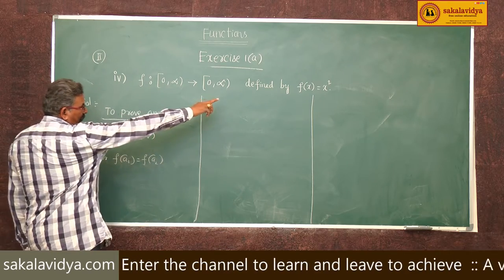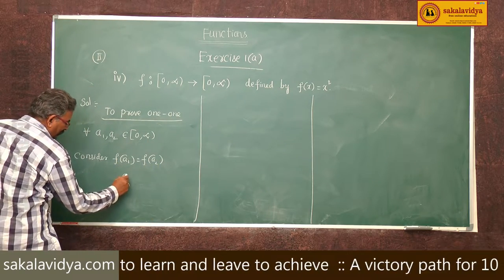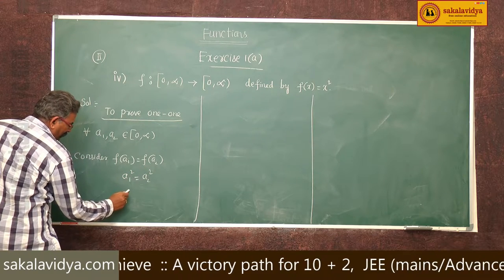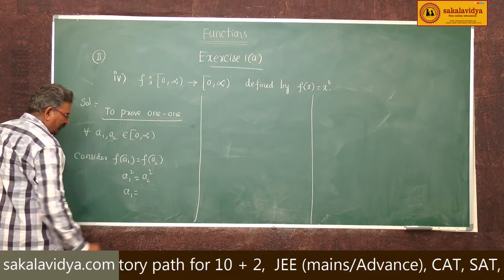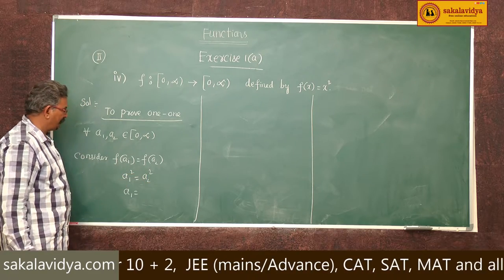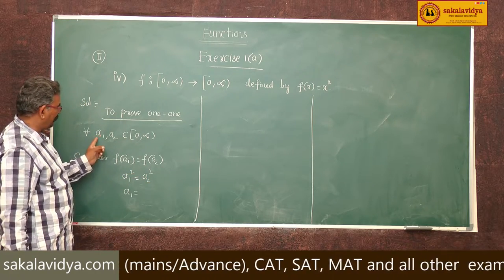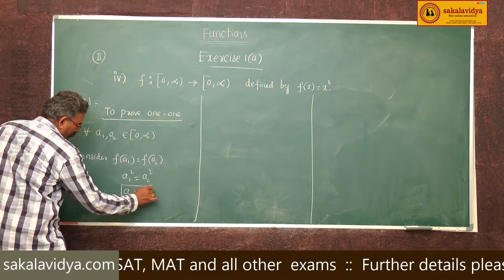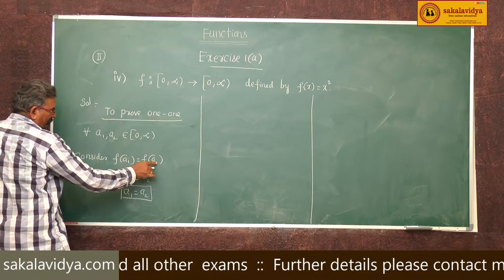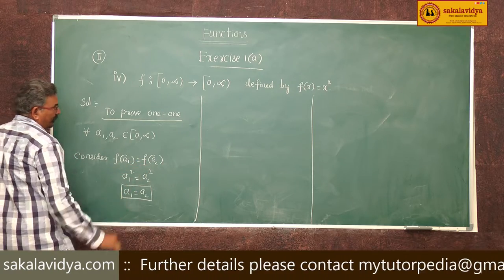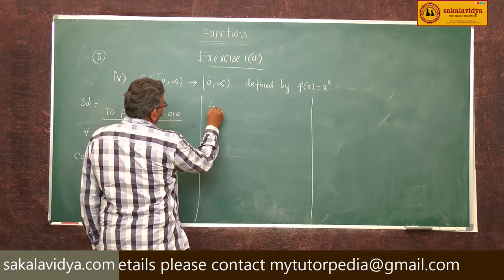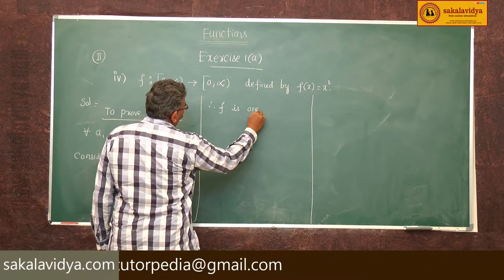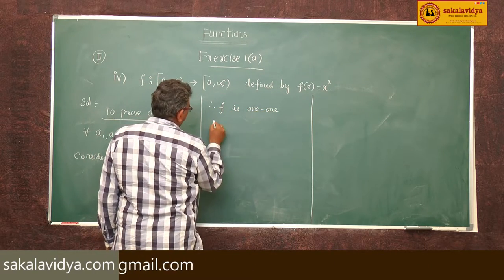Since f(x) = x², we have a1² = a2². Generally we get a1 = ±a2, but since a1 and a2 are positive (belonging to [0, ∞)), we get a1 = a2 only. So f(a1) = f(a2) implies a1 = a2. Therefore, f is 1-to-1, i.e., an injection.